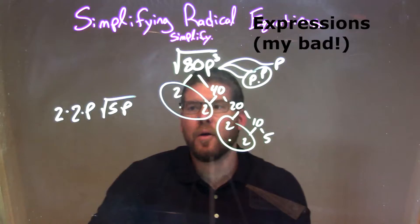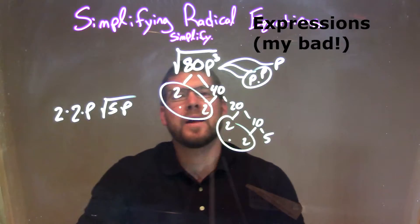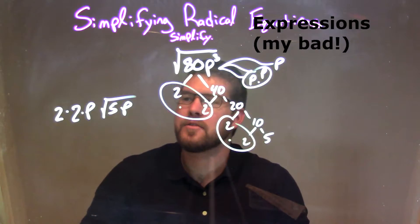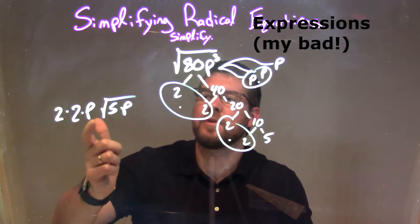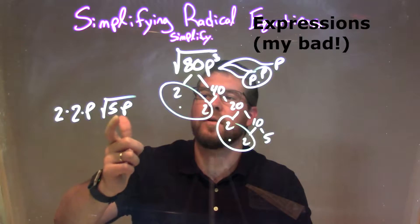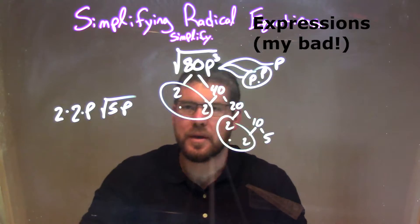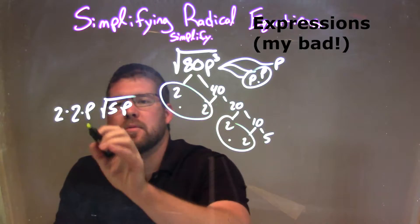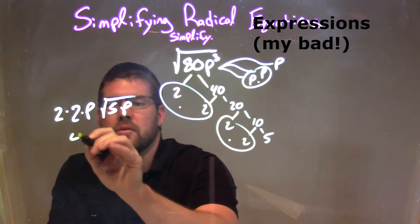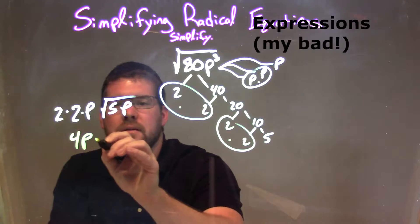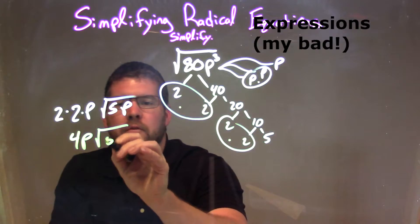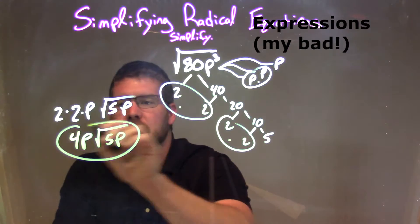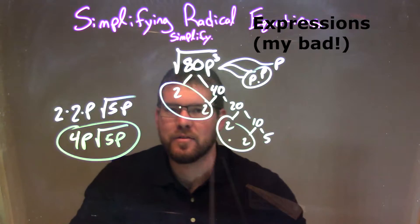So now I have rearranged the square root of 80p to the third power, applying it to be 2 times 2 times p times the square root of 5 times p. Let's keep going — 2 times 2 is 4, so we have 4p times the square root of 5p, and that is our final answer.